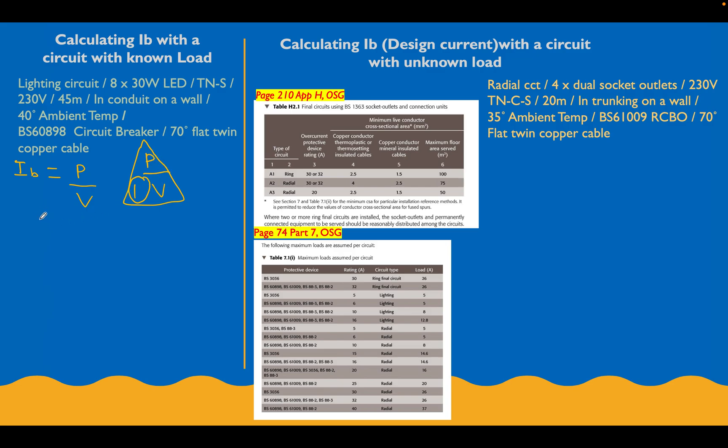For our lighting circuit we've got to work out our power rating: 8 times 30 watt LEDs, so 8 multiplied by 30, which is going to give us 240 watts. That's our power rating for that circuit. So our design current is going to be equal to 240 watts divided by the voltage, 230. When you punch that into your calculator that's going to give you a value of 1.04 amps. That's how easy it is to get the design current for a circuit when we've got a known load. When I say known load, I mean this is a load on the circuit - the 30 watt LEDs.